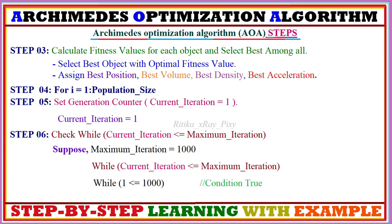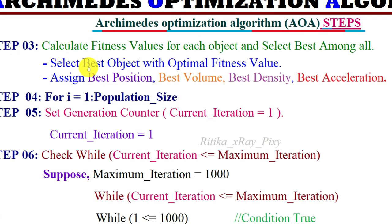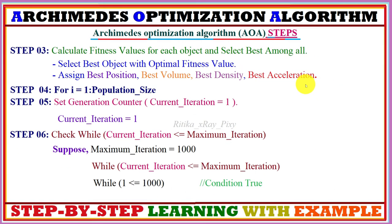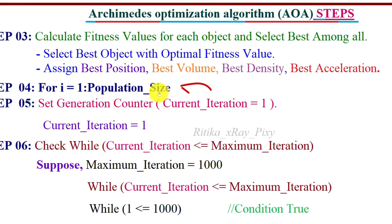In step three, we calculate the fitness value for each object and select the best among all. Once the fitness value for each object is calculated, we select the object with the best fitness value. The best object is determined by joining the best volume, best density, and best acceleration. After that, the main loop starts.